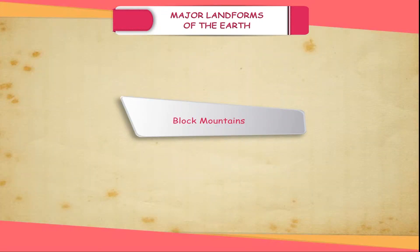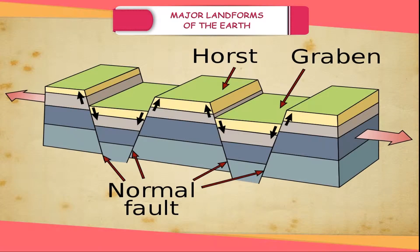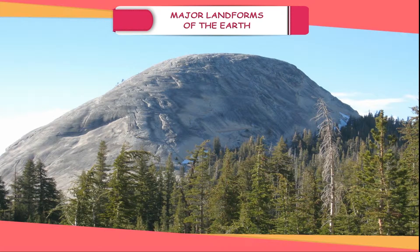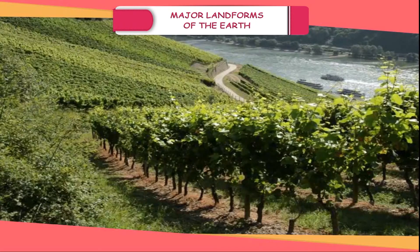Block mountains are created where large areas are widely cracked or broken up by faults and displaced vertically. The uplifted blocks are termed horsts and lowered blocks are termed grabens. This form of landscape can be seen in the Rhine Valley in Europe.